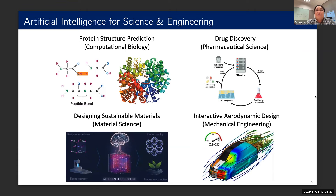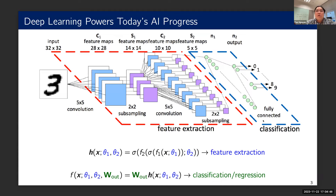Artificial intelligence has caused a lot of revolution in a variety of applications recently, including computational biology, pharmaceutical science, material science, and mechanical engineering. The models underlying AI are deep learning models, which contain multiple layers. For example, we have an input image that we send to a deep learning model, which processes the image from layer to layer.